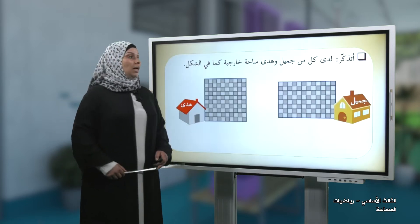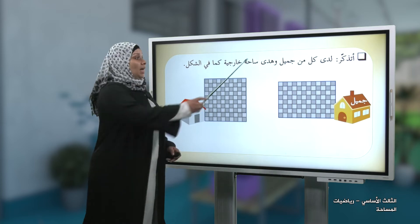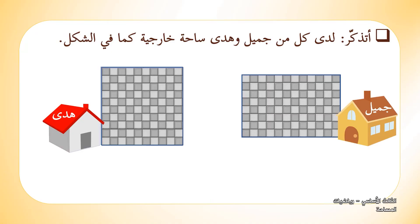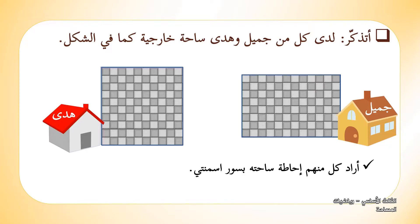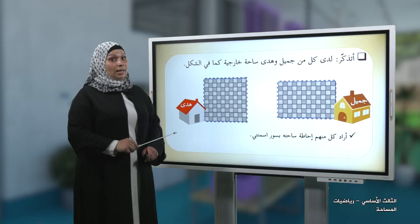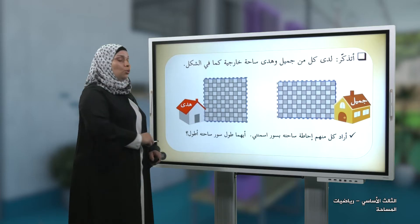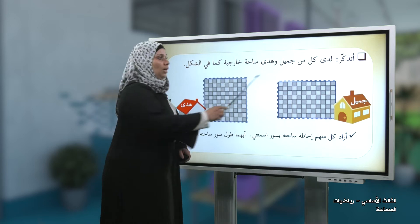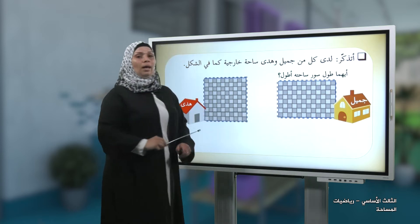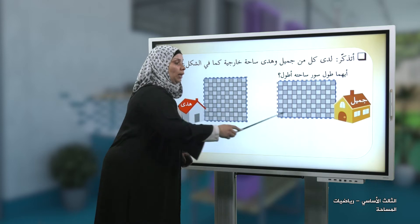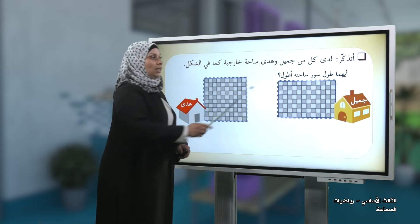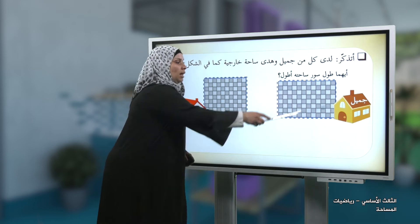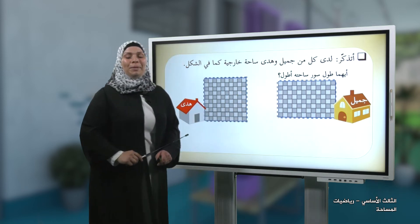هيا بنا نبدأ ونتذكر. لدى كل من جميل وهدى ساحة خارجية كما في الشكل. أراد كل منهم إحاطة ساحته بسور اسمنتي. السور يحيط بالساحة - تعرفنا في لقاء سابق أن طول سور الساحة يعبر عن المحيط.